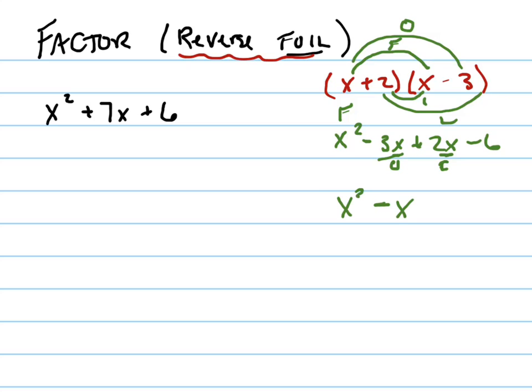So the first is right there. Negative x is the o plus i, and negative 6 is the last. So what would this be equal to? It would be equal to x squared minus x minus 6. And there's my foiling, is right there first, outside plus inside, and last.